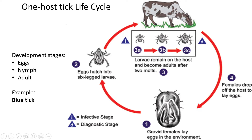As the picture shows, there is only one host — in this case a cow. The tick attaches to the cow and eventually falls off and lays eggs. In its entire life, one individual tick only attaches to one species. It can suck the blood of, say, a hundred cows, but the point is it's always the same species.